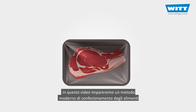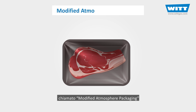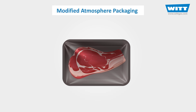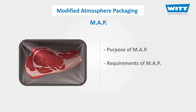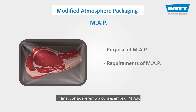In this video, we're going to learn about a modern method of food packaging called modified atmosphere packaging, or simply MAP. First, we will talk about the purpose of this method and then take a deeper look at its requirements. Finally, we'll consider some examples to further our understanding of MAP.